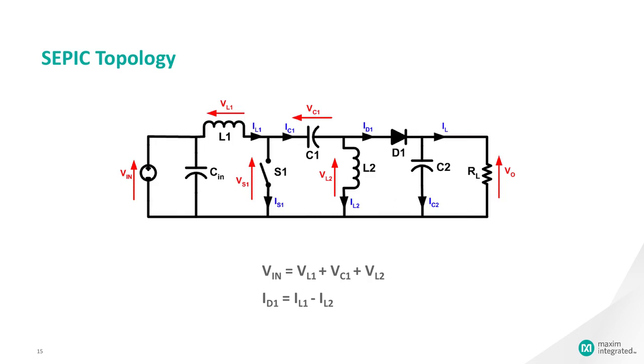Therefore, the average current through inductor L2, or IL2, is the same as the average load current and hence independent of the input voltage. Looking at the average voltages, the following can be written: VIN equals VL1 plus VC1 plus VL2. Because the average voltage of VC1 is equal to VIN, VL1 is equal to minus VL2.